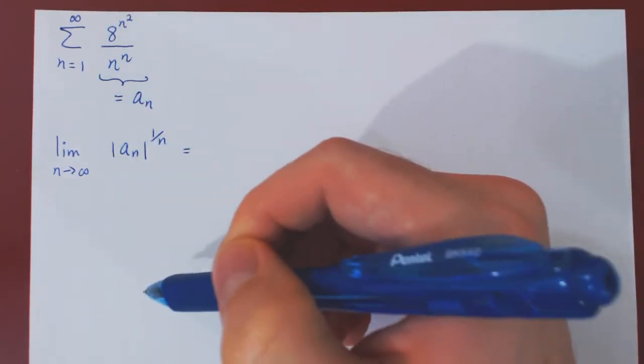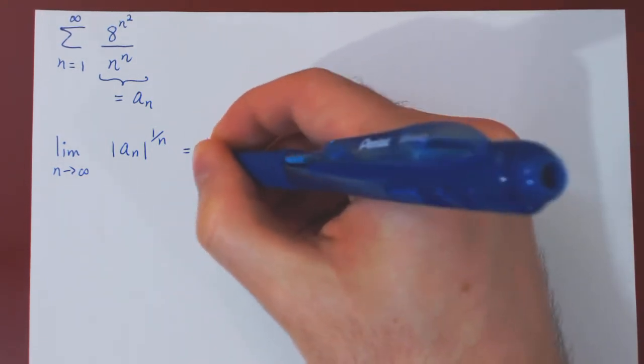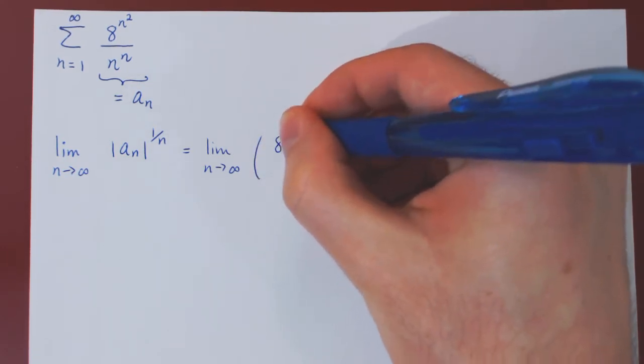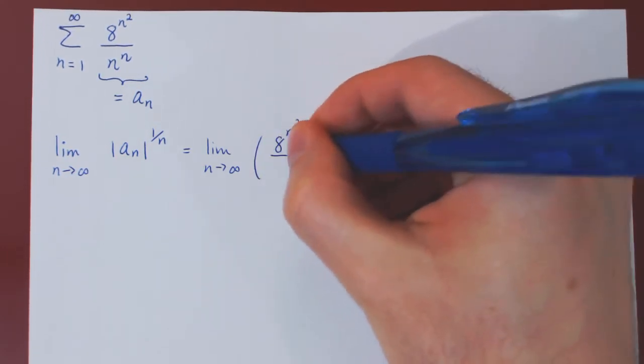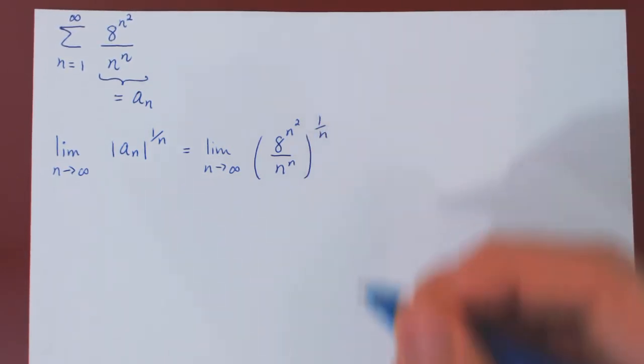Well, as a_n is clearly positive for all n, we can drop the absolute value. Now we can replace a_n by 8 to the n squared over n to the n, all raised to the power of 1 over n.